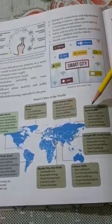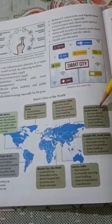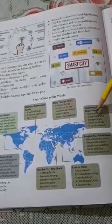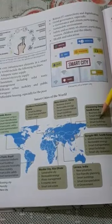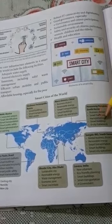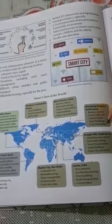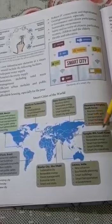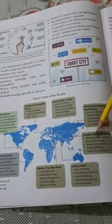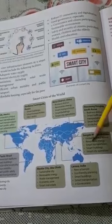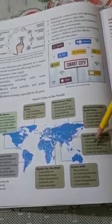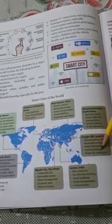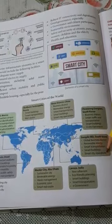Next is Hwaseong Dongton in South Korea, featuring a business district, smart traffic and transportation, smart buildings, and a U-City framework. After that is Songdo IBD in South Korea, which includes a global business district, renewable energy, smart transportation, smart buildings, and smart city operations.